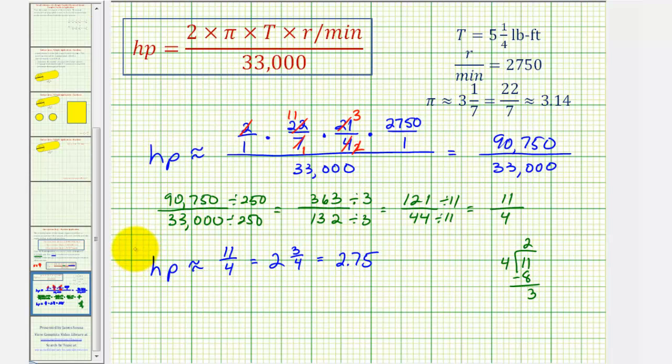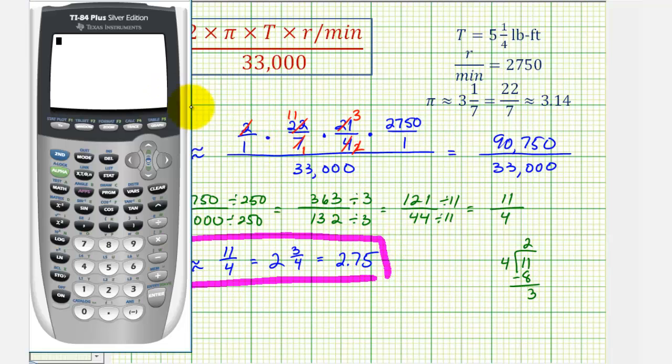Let's go ahead and verify these results on a calculator. So we'll type in the product of these fractions here, and then divide by 33,000. So we'll put this entire product in a set of parentheses. So we'll have two times 22 sevenths times 21 fourths, and then times 2750, close parenthesis, and then we'll divide by 33,000. This does verify that our work is correct. We have 2.75 horsepower. If we press math, enter, enter, we can also verify that 11 fourths is also correct.